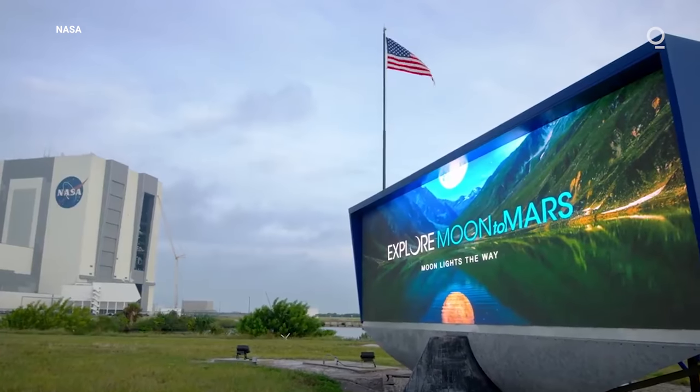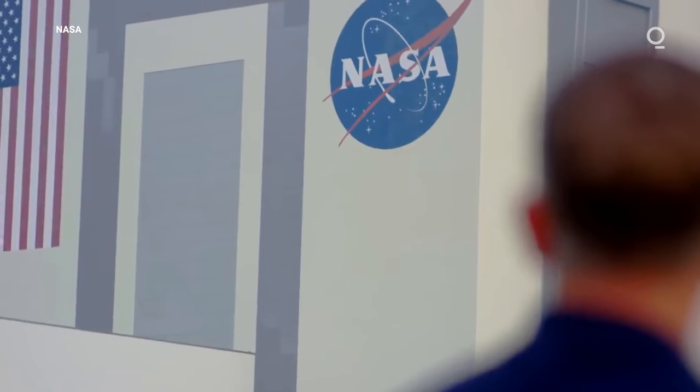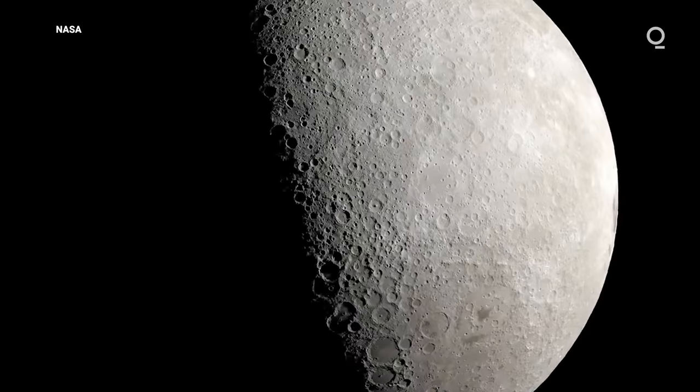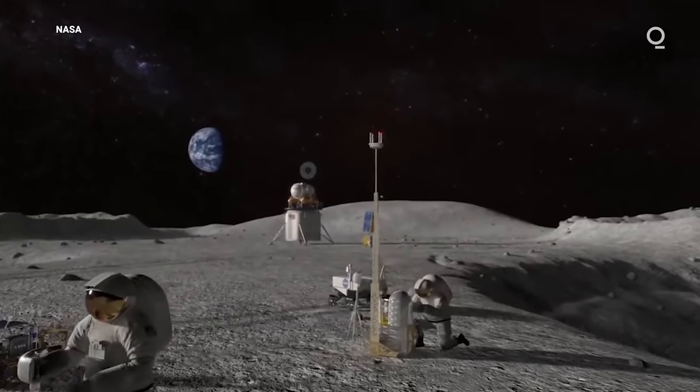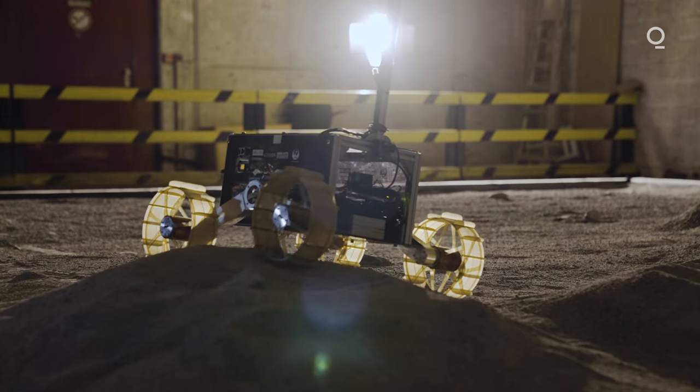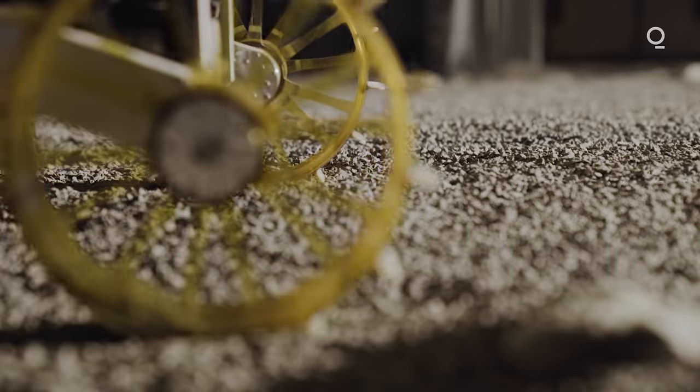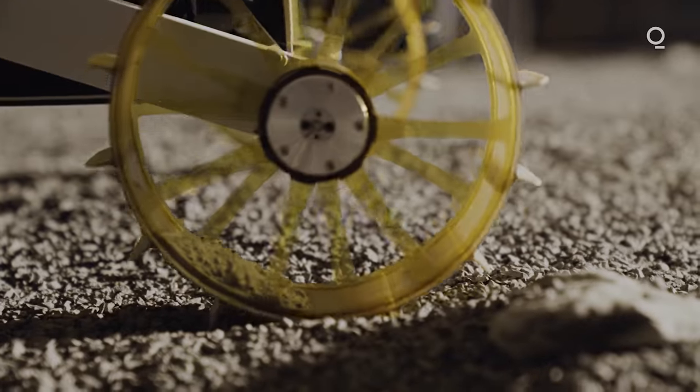iSpace was also awarded two contracts from NASA to collect lunar regolith and transfer ownership of the resource to the agency as part of the Artemis program to the moon. And if we're successful this will make iSpace Europe, so the entity located in Luxembourg, the first company to actually put in practice the law of space resources that was passed in 2017.